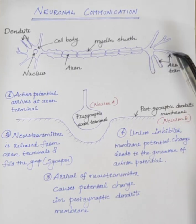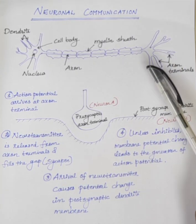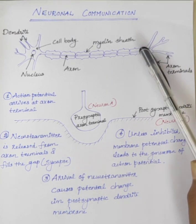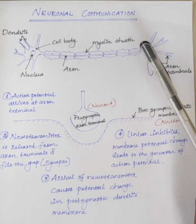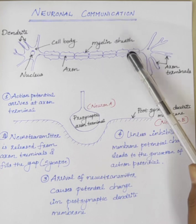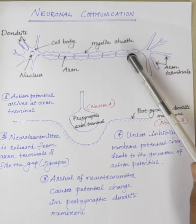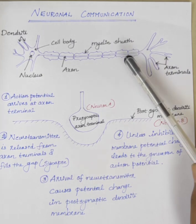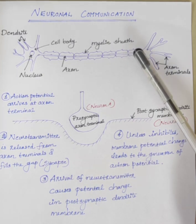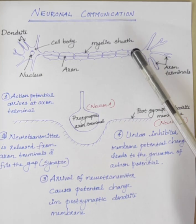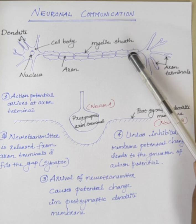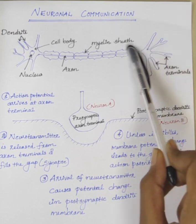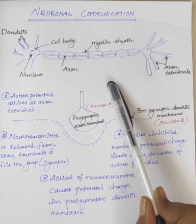Good morning students. Today we will discuss neuronal communication. Neurons are the basic functional units of the nervous system and they generate electrical signals called action potentials, which allow them to quickly transmit information over long distances. So this one is the structure of a neuron.